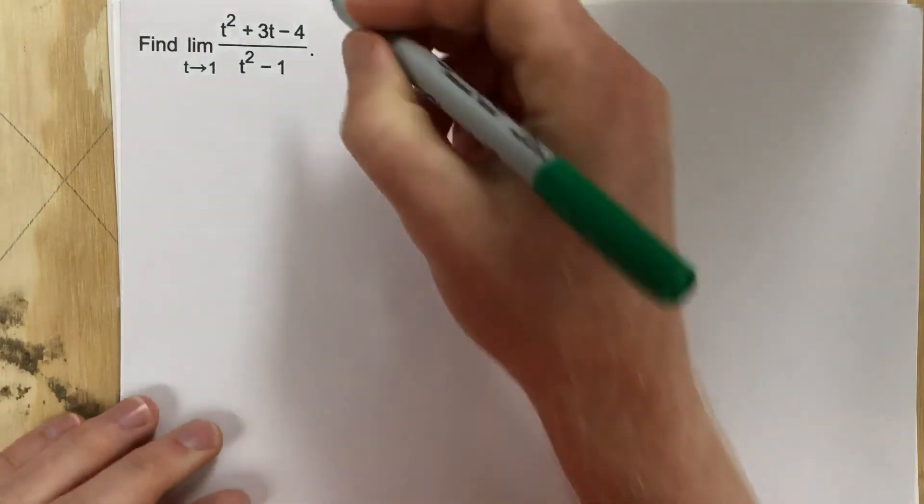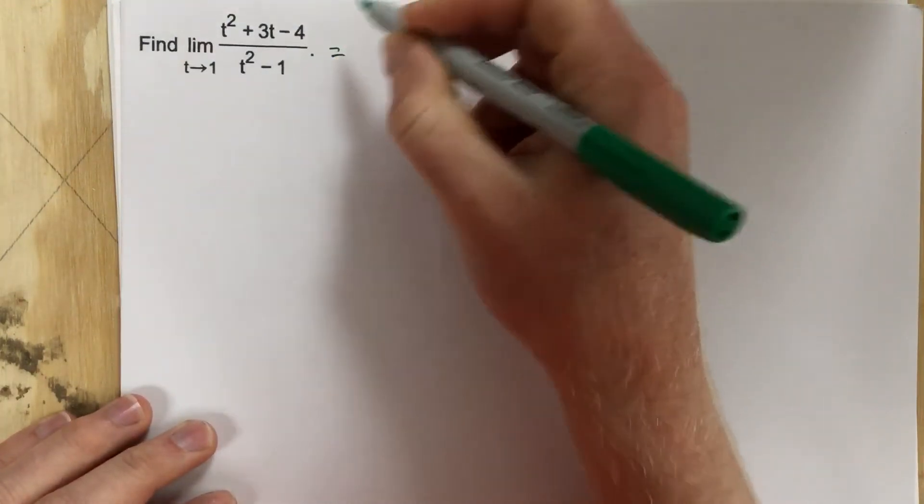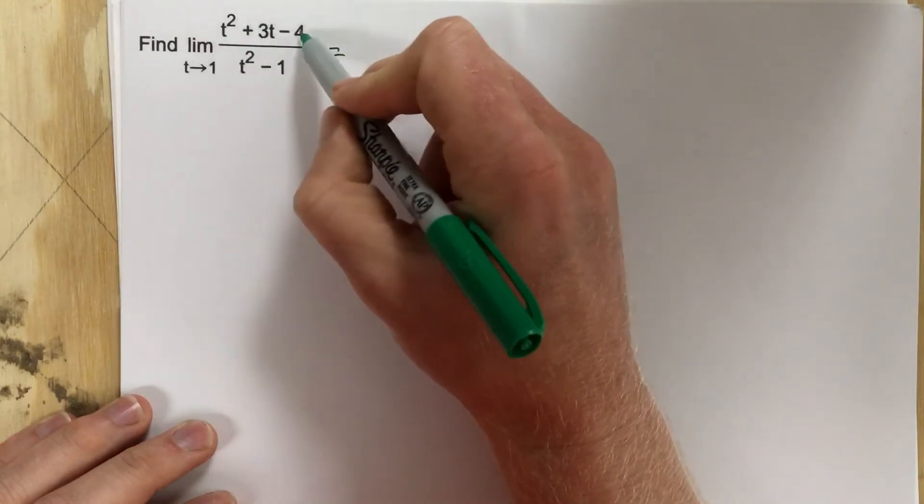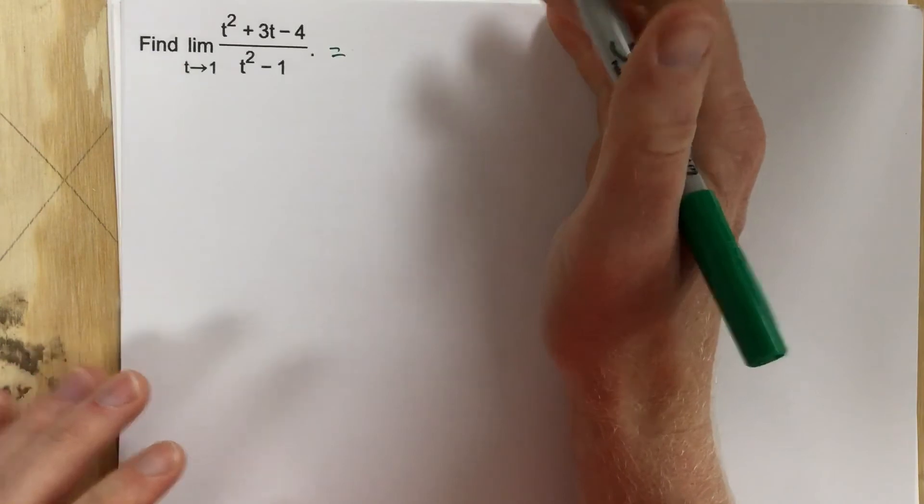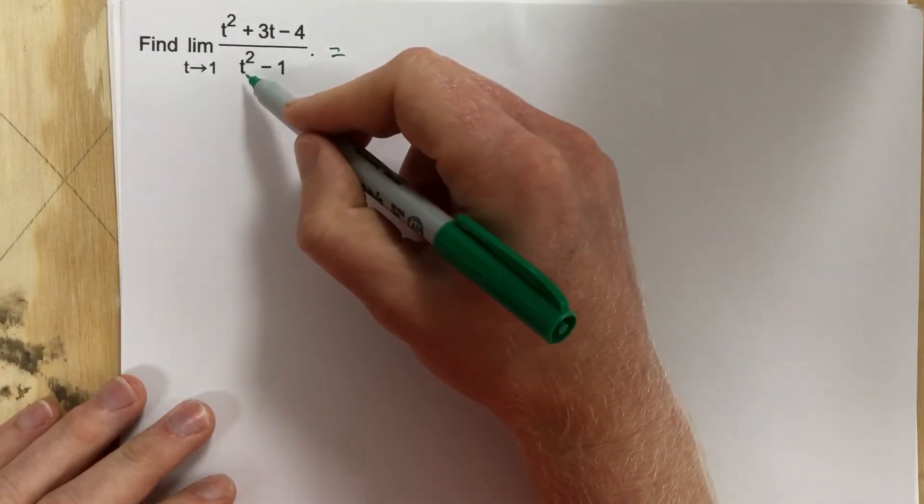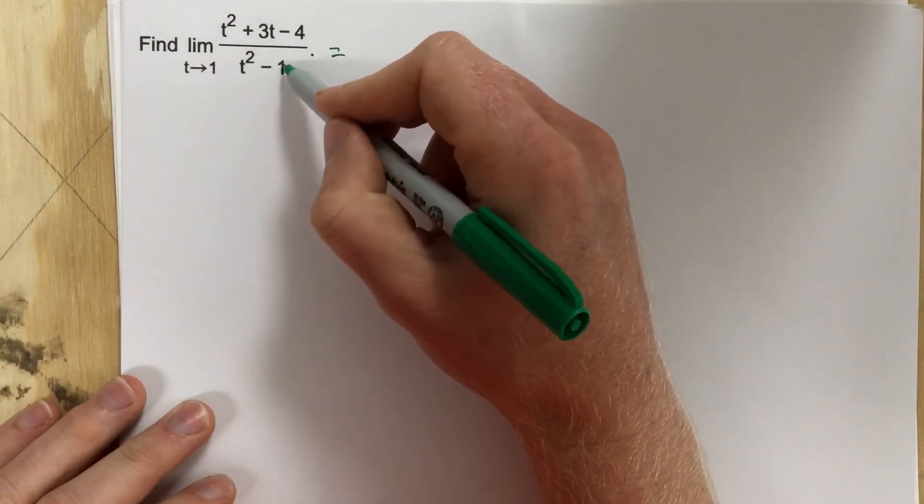So I need to do some manipulating. First thing I'm going to do is look at, because I have a quadratic on top and bottom, I think can I factor? Well I know I can factor t squared minus 1 because both are squares.